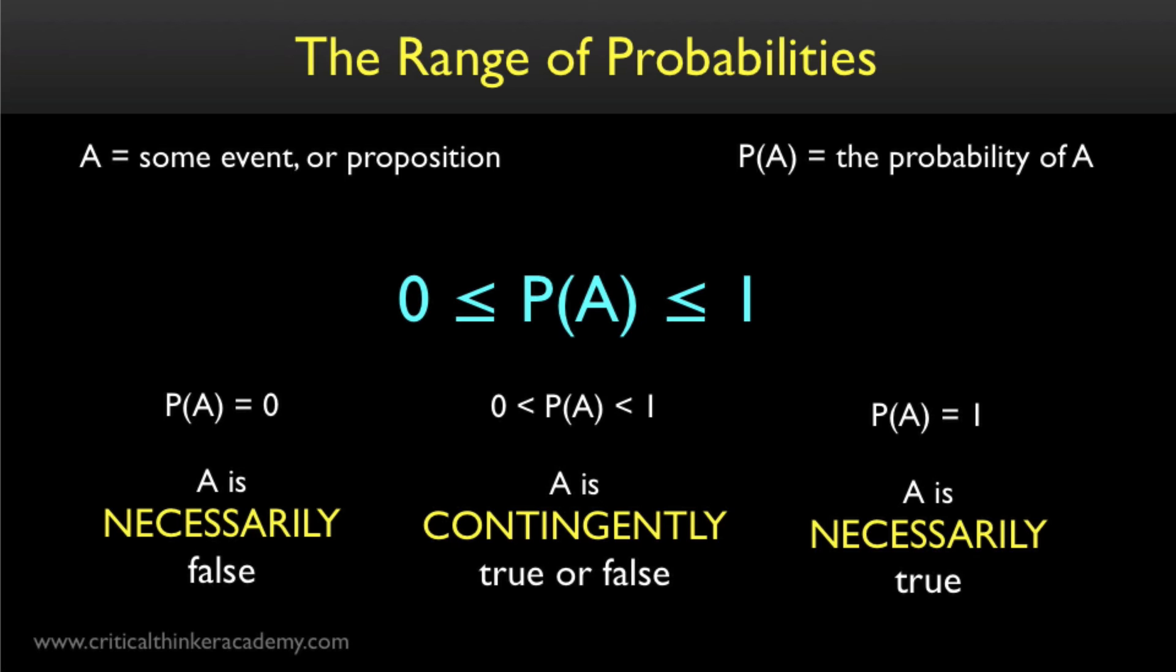In this context, contingent just means possible. It's possible that the event will occur. If it occurs, it occurs. But we understand that it could have happened otherwise. And that's what we mean when we say it's contingent, rather than necessary.